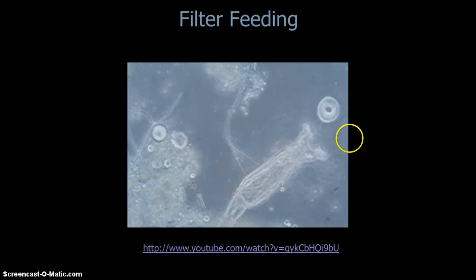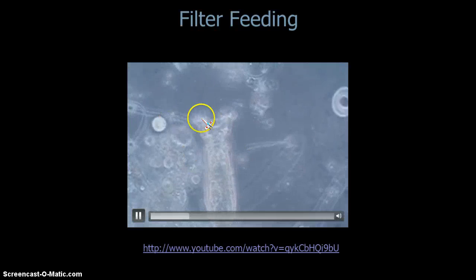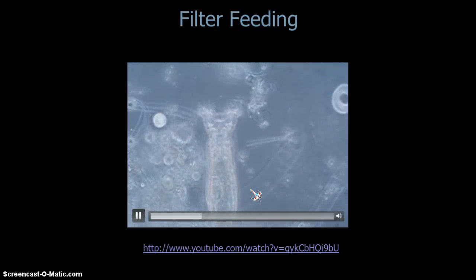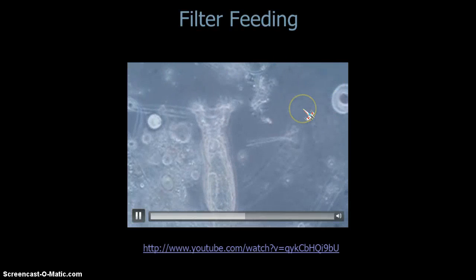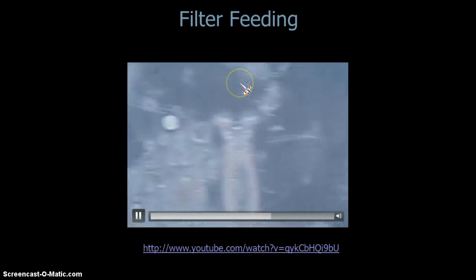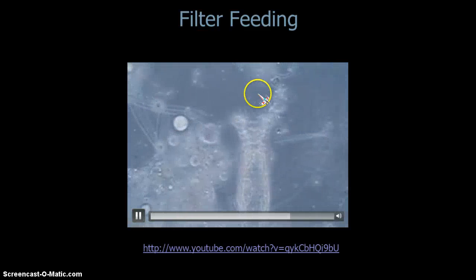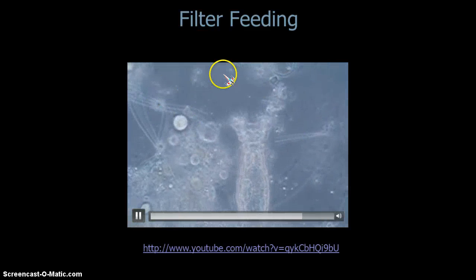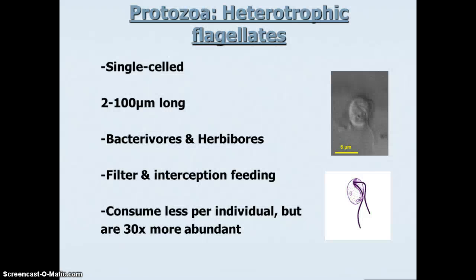Here's a quick video showing an example of filter feeding. This is a rotifer — a multicellular consumer, not a protozoan — but it gives you the general idea of how they create feeding currents. Ciliates and other protozoa can either swim around and capture things as they filter water while swimming, or they can create feeding currents that draw all these particles in. Each one of these particles is a bacterium.